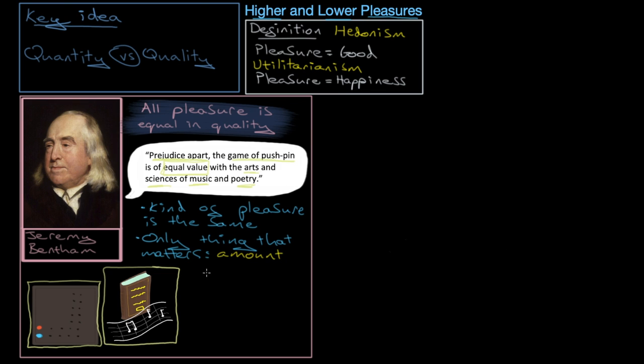Now, what Bentham says is that we can work out what the right thing to do according to the hedonic calculus, which takes into account things like duration, and likelihood, and how many people it affects. Quality, though, you'll notice is missing from the hedonic calculus from those seven rules.